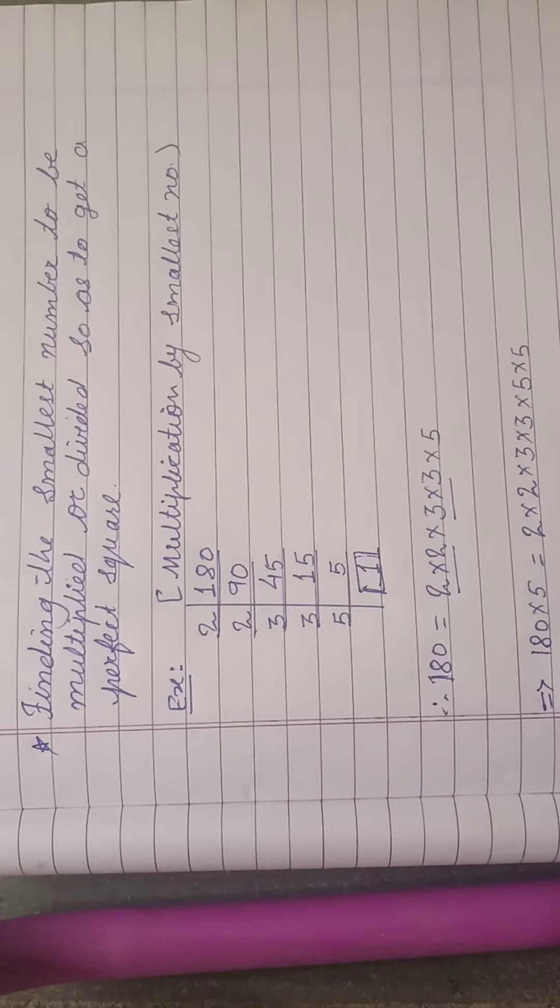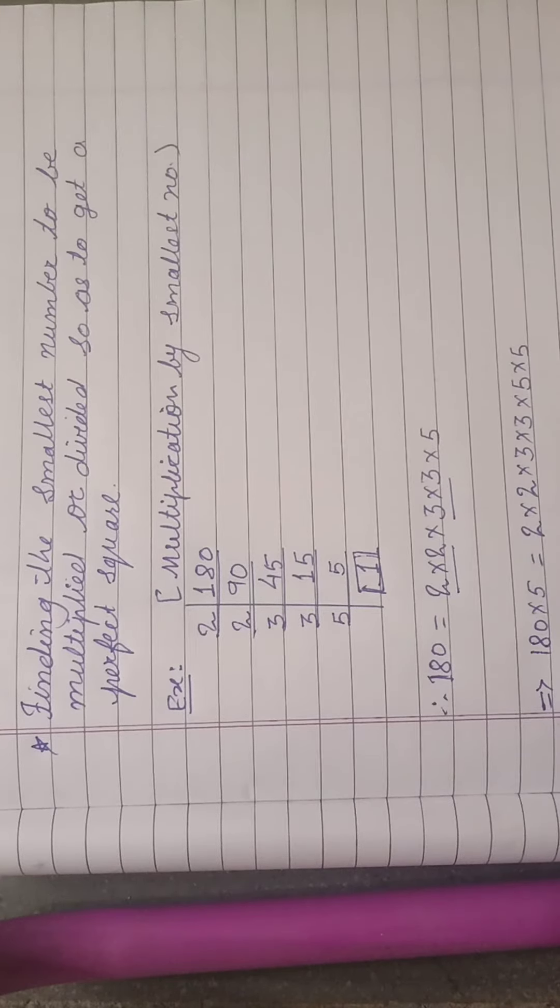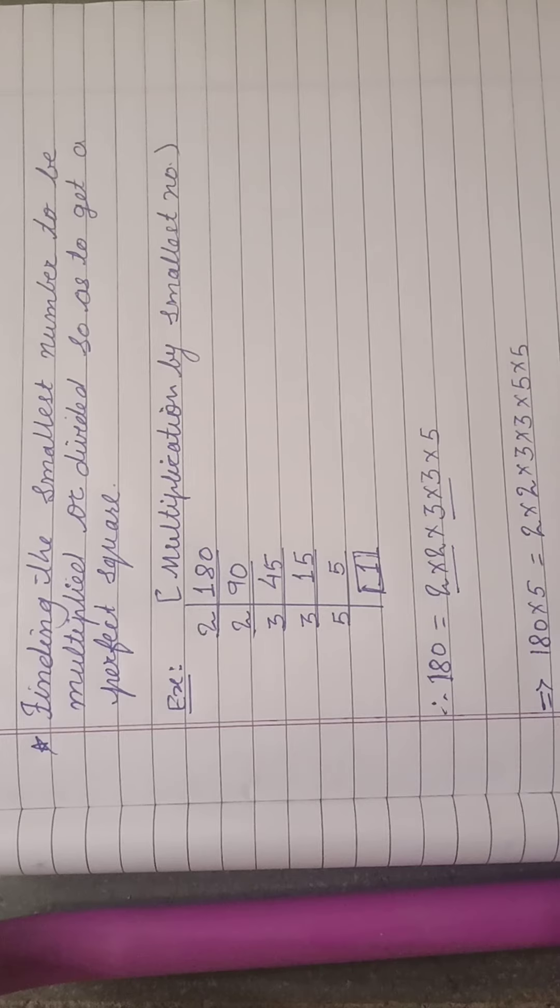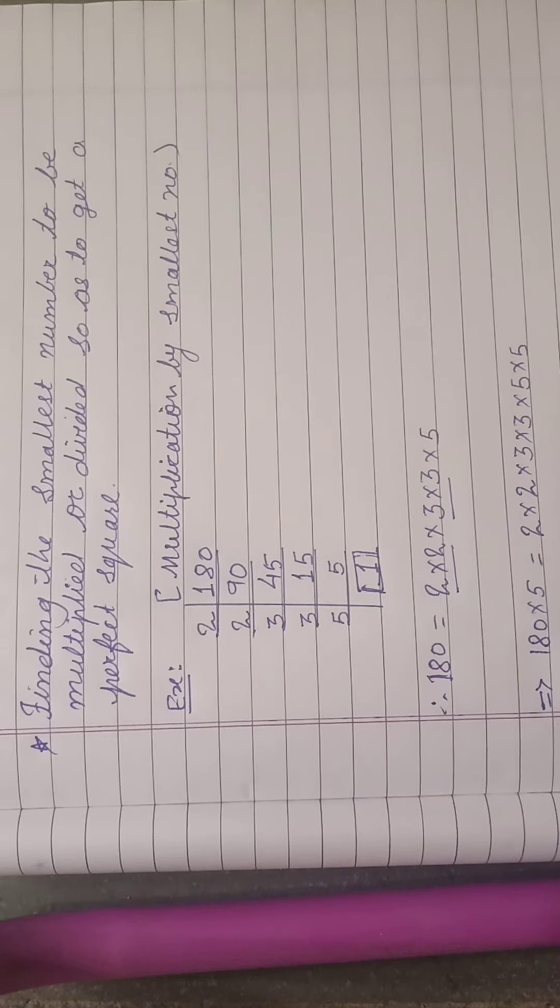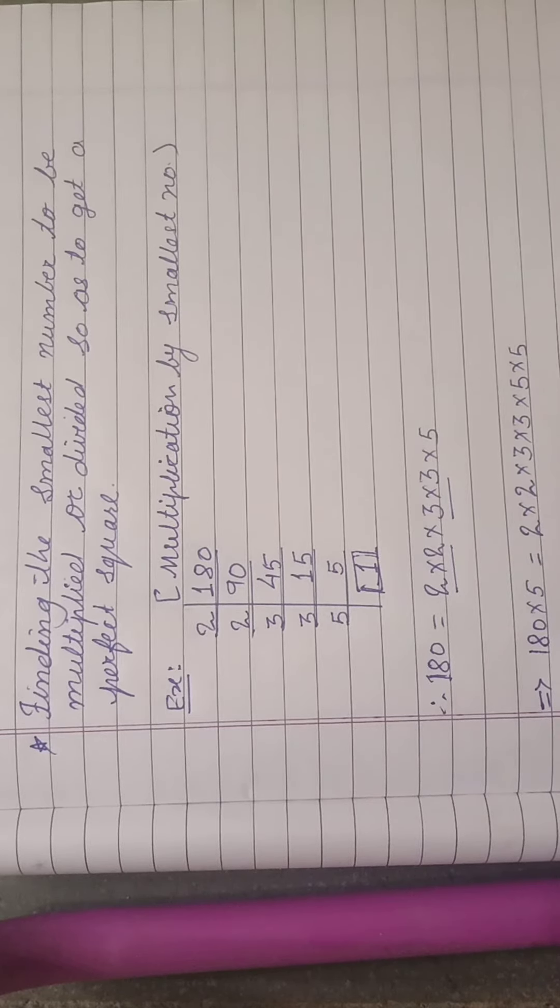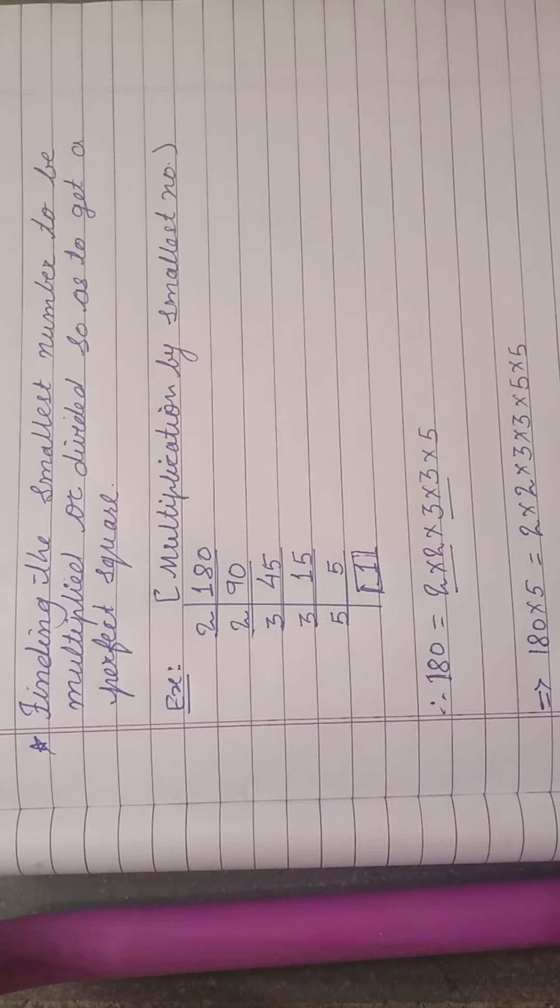Now here we have taken one example and it is for multiplication by the smallest number. See, 180 is the number and we want to factorize this number. The factors of this number are 2 into 2 into 3 into 3 into 5.